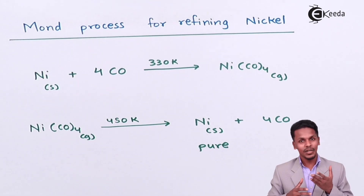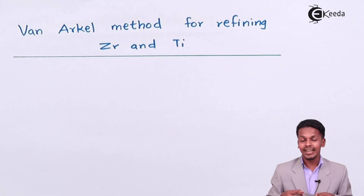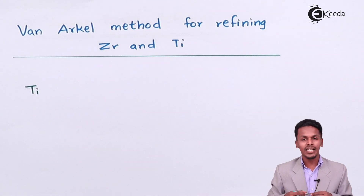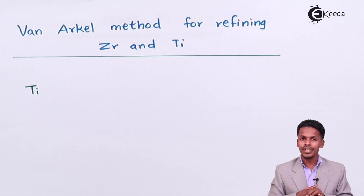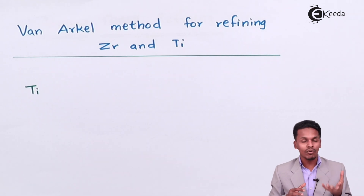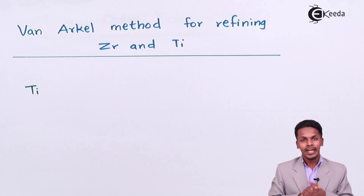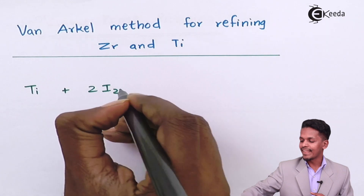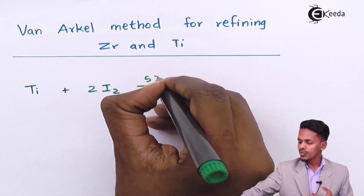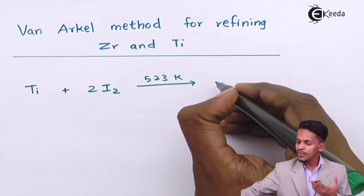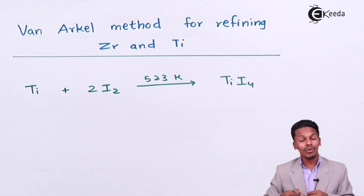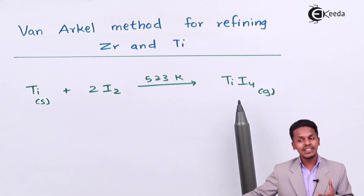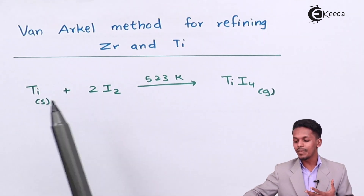The next method is the Van Arkel process for refining zirconium and titanium. Considering titanium: impure titanium containing nitrogen and oxygen impurities is first treated to remove those gases, giving crude titanium. This crude titanium is then treated with 2 moles of iodine at a temperature of 523 Kelvin, forming the volatile substance TiI₄.